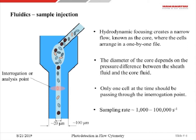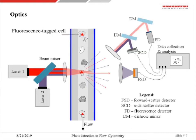At some point in the flow cell, there is a point known as the interrogation point. When a cell passes that interrogation point, light from an external laser illuminates the cell. Light scatters from the cell, and the scattered light carries information about the cell. In modern flow cytometry, the sampling rate of cells can vary from about 1,000 cells per second to, in some cases, even 100,000 cells per second.